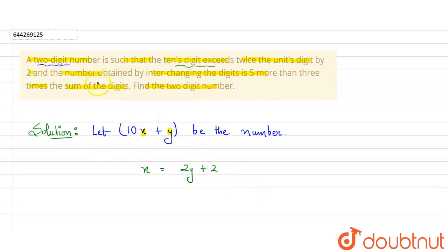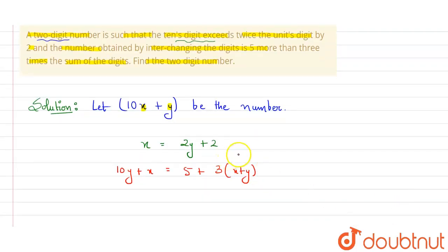And it is given here that the number obtained by interchanging the digits. If I will interchange the digit, interchanging the digit means in place of x we will write y and vice versa. The number obtained by interchanging the digit is 5 more than 3 times the sum of digits. If I interchange the digits that is 10y + x, then it will be 5 more than 3(x + y). This will be the equation.